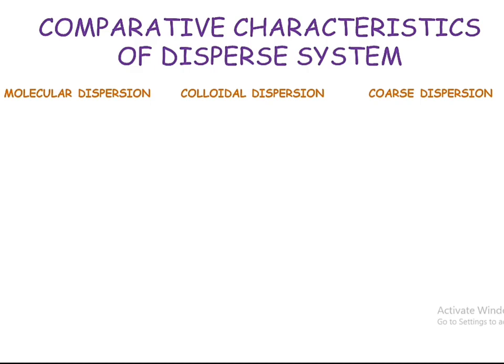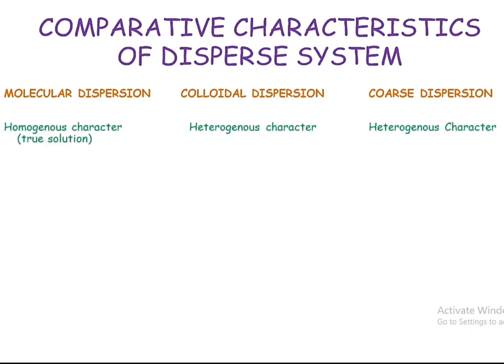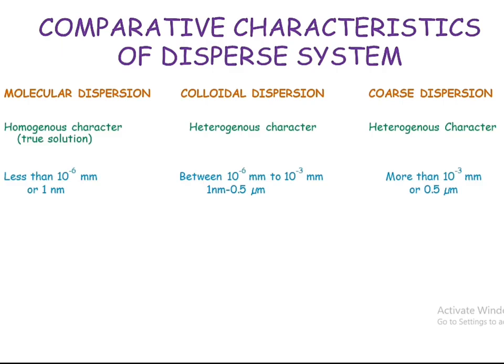Now let's look at the comparative characteristics of dispersed systems: molecular dispersion, colloidal dispersion, and coarse dispersion. Regarding their nature, molecular dispersions are homogeneous and are also known as true solutions. Colloidal dispersions show heterogeneous character, meaning both phases can be separated. Coarse dispersions are also heterogeneous in character.